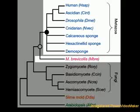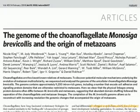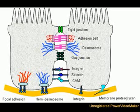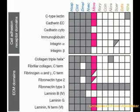Question 2: If multicellular animals evolved from choanoflagellates, where did all the cell adhesion and cell-cell signaling proteins come from? Recently, the genome of a choanoflagellate was sequenced, revealing some amazing contents. Modern multicellular organisms use a range of protein domains to facilitate cell adhesion and cell-cell communication — these include cadherins, integrins, lectins, immunoglobulin, and collagen domains. It turns out the genome of the free-living single-celled choanoflagellate contains dozens of proteins with cadherin, integrin, lectin, immunoglobulin, and collagen domains, shown here in magenta.